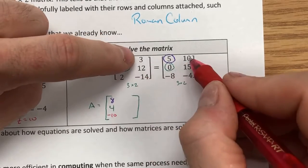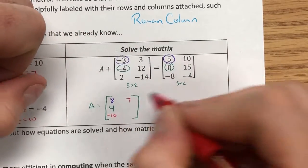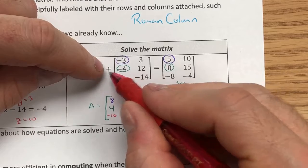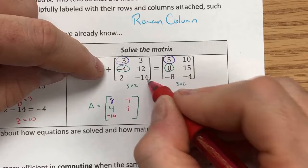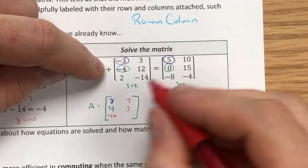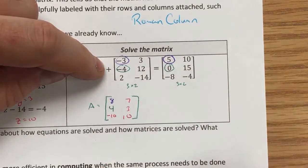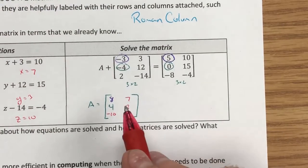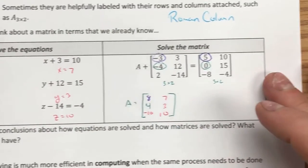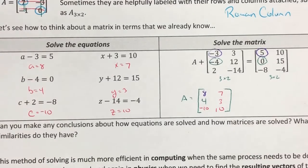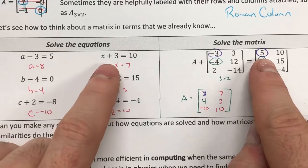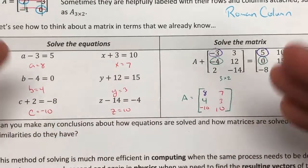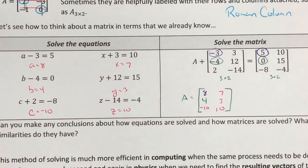Top right, what plus 3 is top right 10? 7. Middle, I would say what plus 12 is 15? I would say 3. What minus 14 is negative 4? That would be 10. And what we'll notice is that our resulting answer matrix looks very similar to a set of equations arranged just like this. I would say, what minus 3 is 5? What plus 3 is 10? It's literally just a set of equations done all at once.